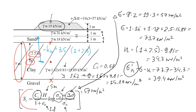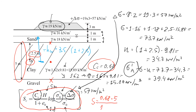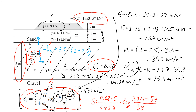Now we use the formula to estimate the settlement of clay. Settlement S = C_c × [H / (1 + e₀)] × log[(σ₀' + Δσ) / σ₀']. Substituting: C_c = 0.68, H = 5 m, e₀ = 1.8, σ₀' = 39.4 kN/m², Δσ = 57 kN/m². This gives S ≈ 0.47 meters.